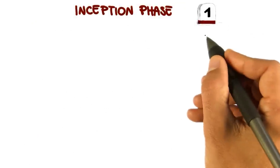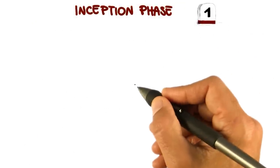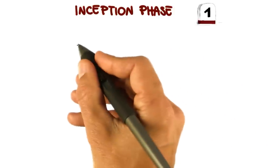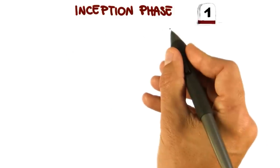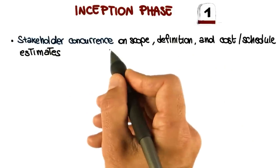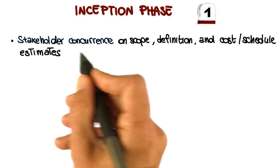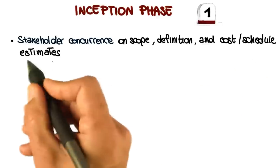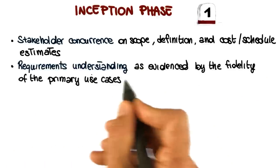So when we're done with the inception phase, we hit the first milestone for the cycle that we're currently performing. And so there are some evaluation criteria that will tell us whether we can consider the inception phase concluded or not. The first of these criteria is stakeholder concurrence, which means that all the stakeholders must agree on the scope, definition, and cost schedule estimates for the project.